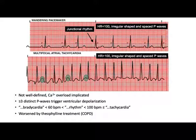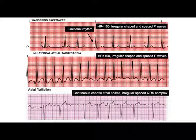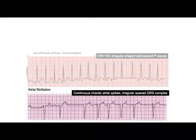Some similarities but key distinctions between these examples: both have multiple foci, but the wandering pacemaker takes turns, while multifocal atrial tachycardia has all foci trying to activate at once. Generally these are a progression — wandering pacemaker can progress to multifocal atrial tachycardia, and if left untreated, this can become atrial fibrillation, which is continuous chaotic quivering of the atria with electrical signals sent everywhere in a disorganized manner.